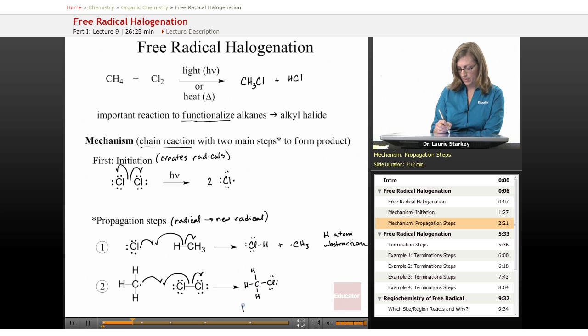So the product we get here now has a carbon-chlorine bond. And we've just made our product. We've just formed a molecule of chloromethane. What else is formed in this step? We also form Cl dot, chlorine atom.